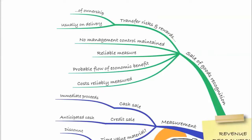So for the sale of goods we need all of these: the transfer of the risk and rewards of ownership — usually on delivery — no maintained management control, a reliable measure of what we'll receive, a probable flow of economic benefit (i.e. we'll get paid), and the ability to reliably measure our costs. If we have all of that, we can recognise the revenue.